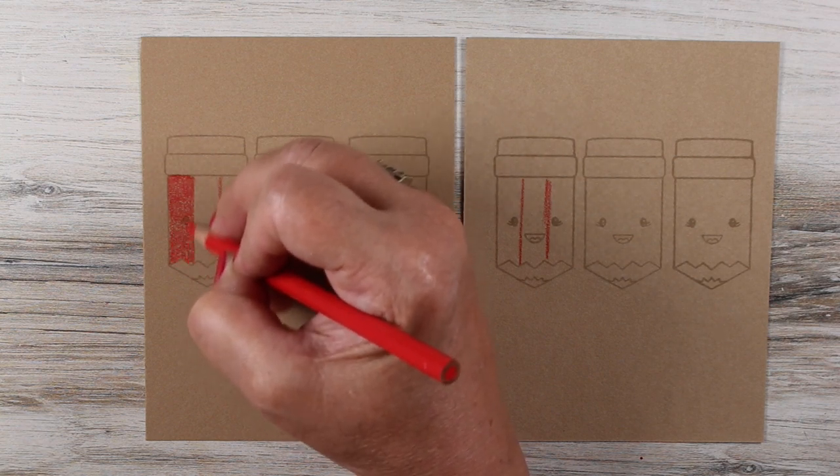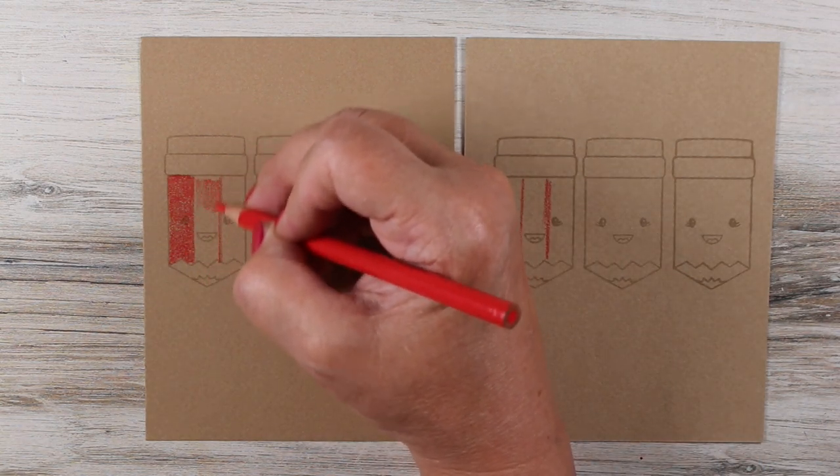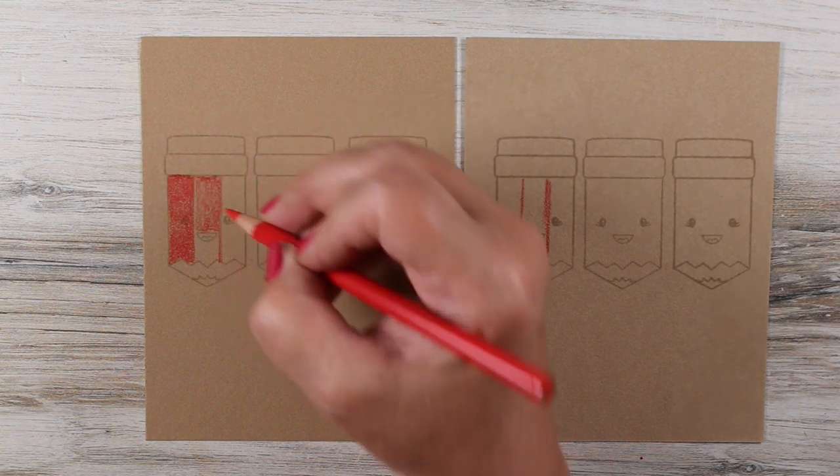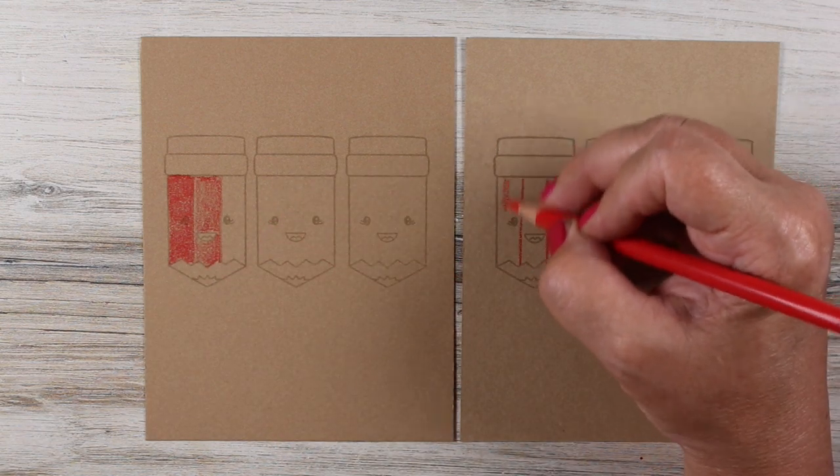One of the reasons I like using a colored paper like this is because it increases the contrast. Now you have a mid-tone that's laid down, and it forces you to use some really punchy colors in order to make them show up.